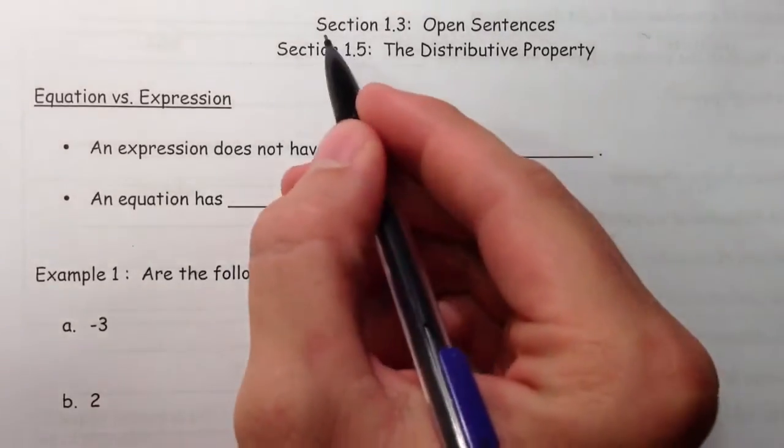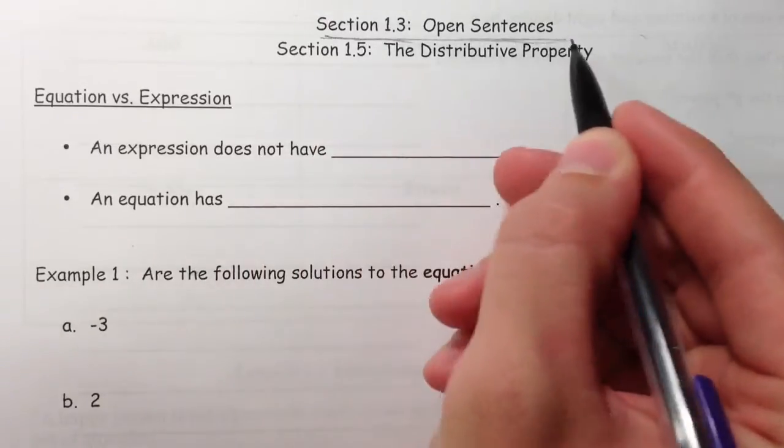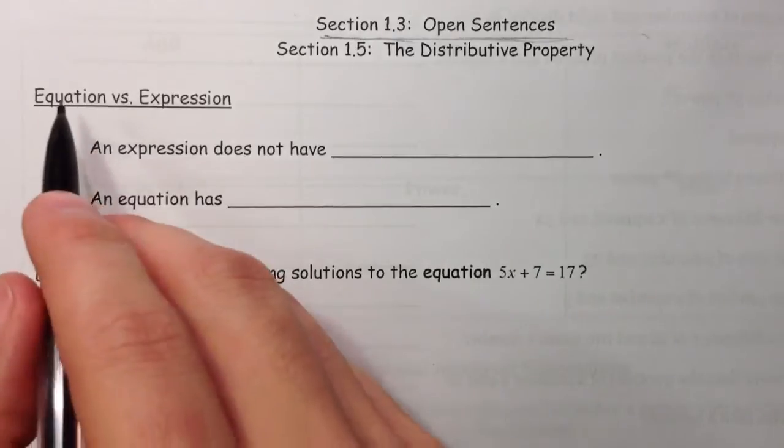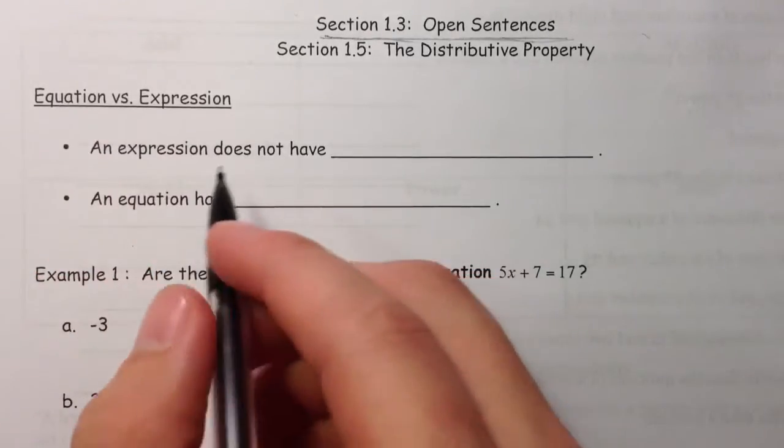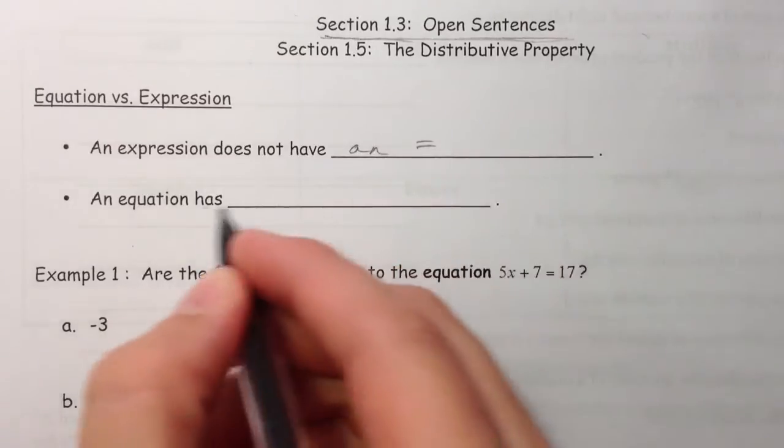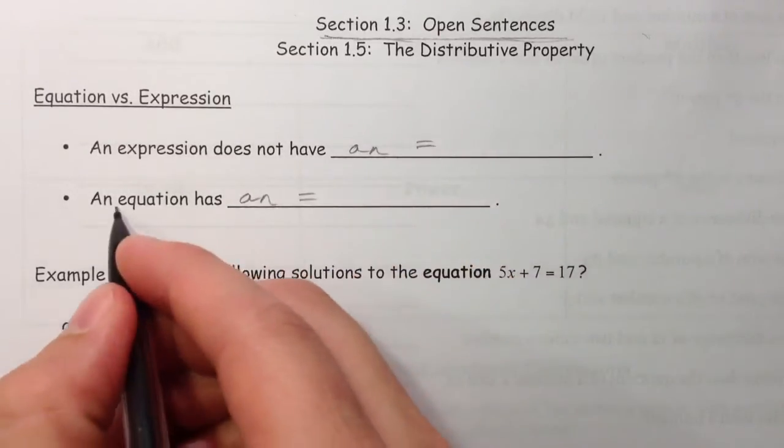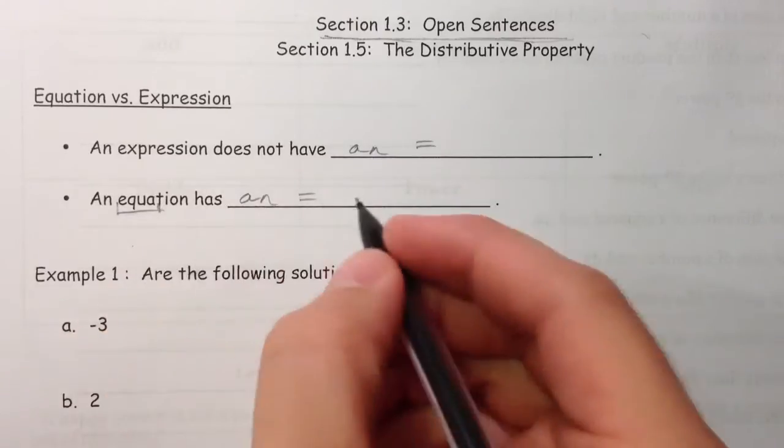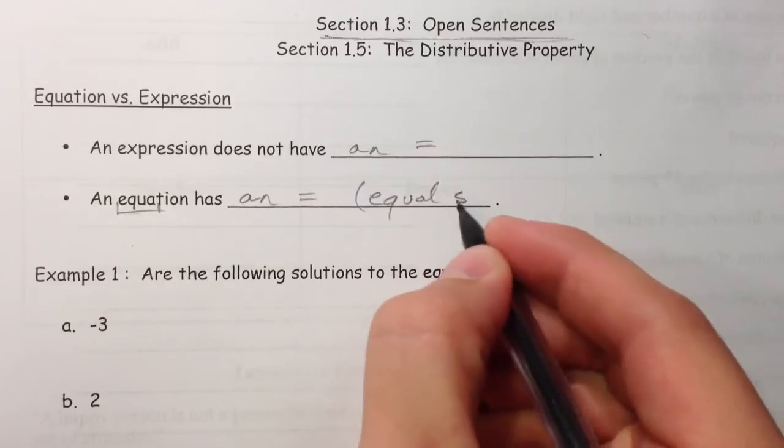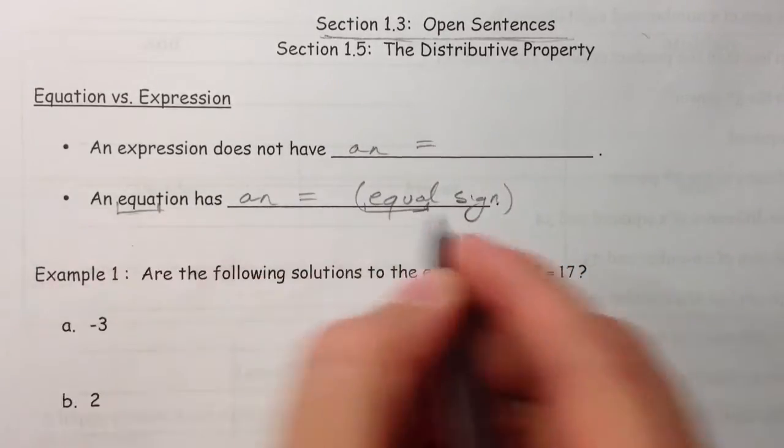All right, we're going to start talking about open sentences. And so before we do that, I want to talk about the differences between an equation and an expression. An expression does not have an equal sign where an equation does have an equal sign. I like to remember that you've got this equation and equal sign, so the equation and the equal sign go hand in hand.